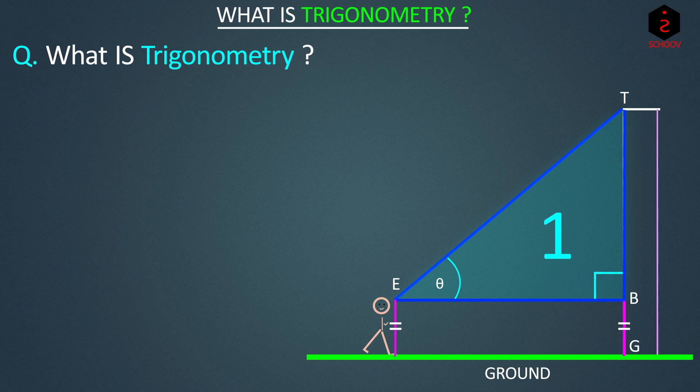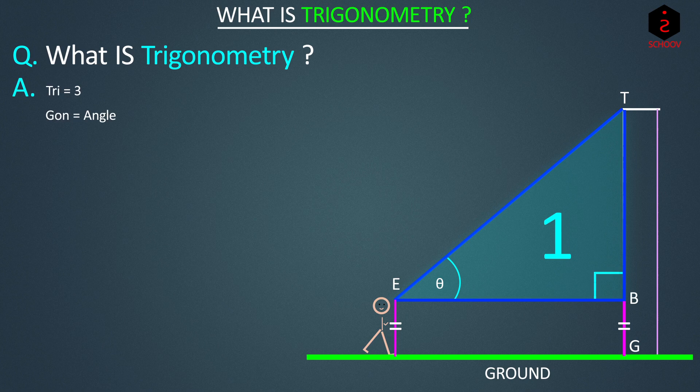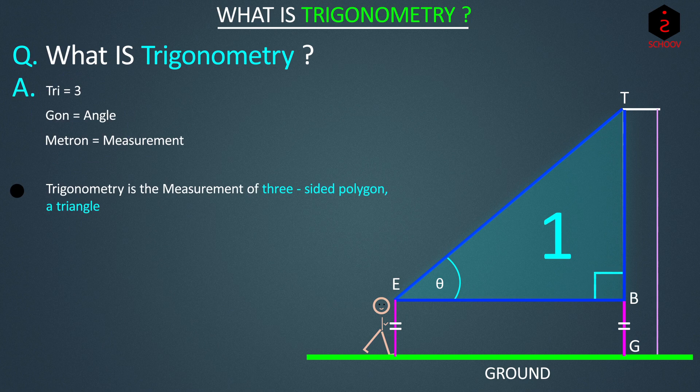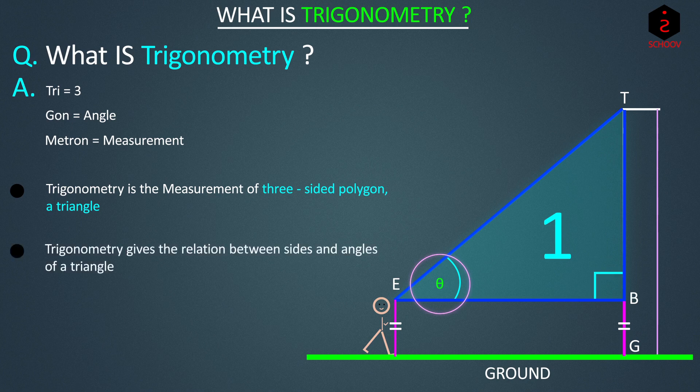And as the name suggests, Tri means three, Gon is angle and Metron is measurement. Trigonometry is the measurement of three-sided polygon that is a triangle. The relation is through this angle theta. So Trigonometry gives the relation between sides and angles of a triangle using some new things called functions which are also called Trigonometric ratios.